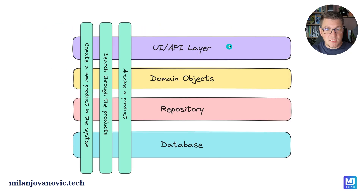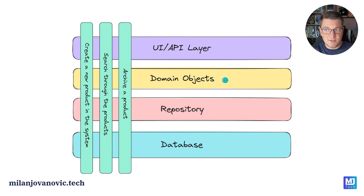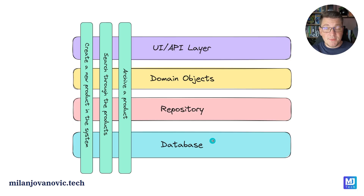This is how you could visualize a vertical slice architecture where an application contains some horizontal layers — a UI or API layer, a domain layer that contains the business rules, a repository layer to load domain objects into memory and store them in the database. Another example would be the typical clean architecture with presentation, application, infrastructure, and domain layers.